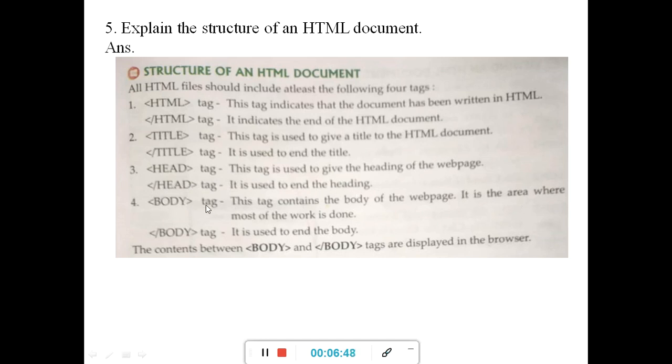Body tag contains the body of the web page. Body of the web page means the content that you are seeing in the web page. If you are finding any information, any information you are gathering from the web page, whatever content that you are getting in the web page, that is the body. How is it written? How is it created? It is created by writing within a body tag. It is the area where most of the work is done and this also has a closing tag. This indicates the end of the body. The content between body and closing body tags are displayed in the browser.